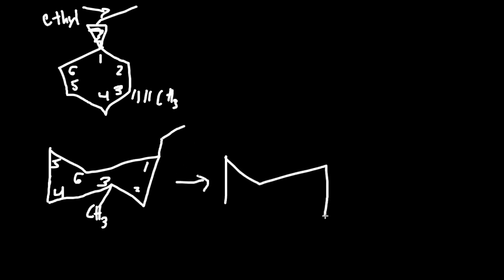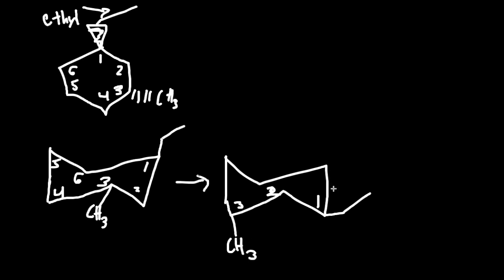We have to do a ring flip. We redraw the ring and renumber: 1, 2, and 3. Looking back at the original problem — on number 1, it's a wedge, so up, but now position 1 is down on the flipped structure — up and down are different sides, so the ethyl group goes on the equatorial side. On number 3, it's a dash meaning down, and position 3 is also down — same side — so the methyl group goes on the axial side. Now the bulky ethyl group is on the equatorial side, making it more stable.